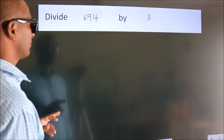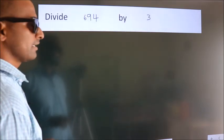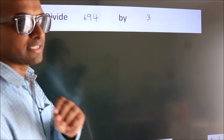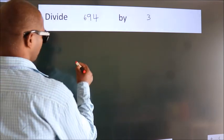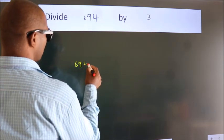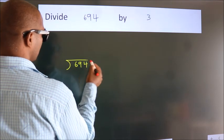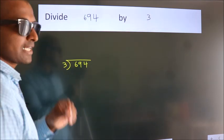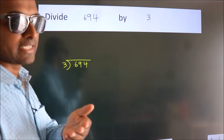Divide 694 by 3. To do this division we should frame it in this way. 694 here, 3 here. This is your step 1. Next,